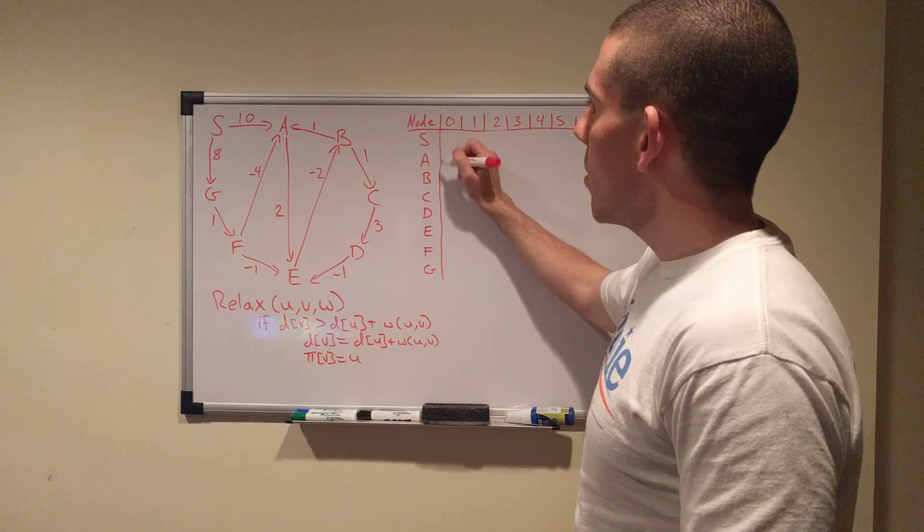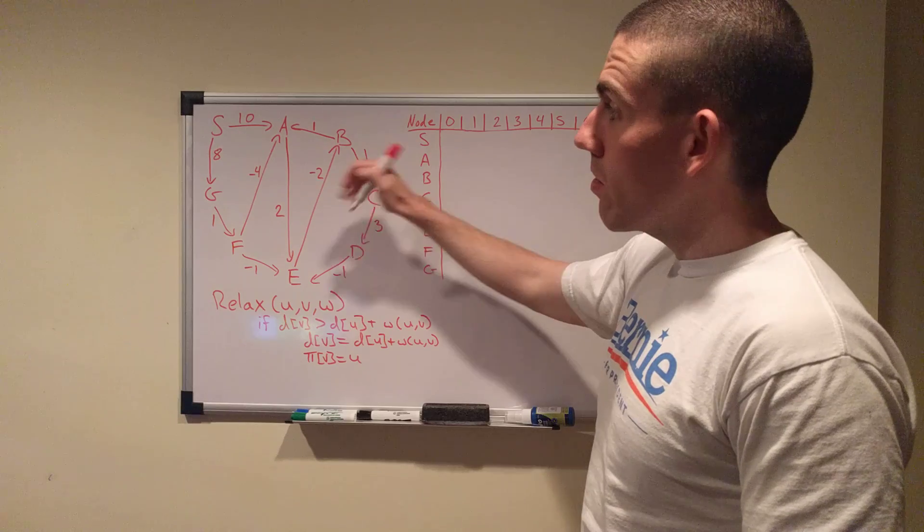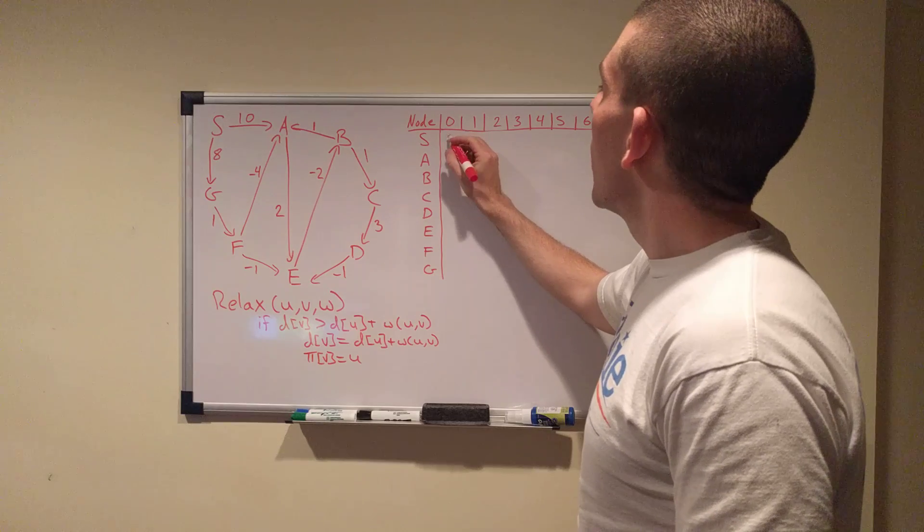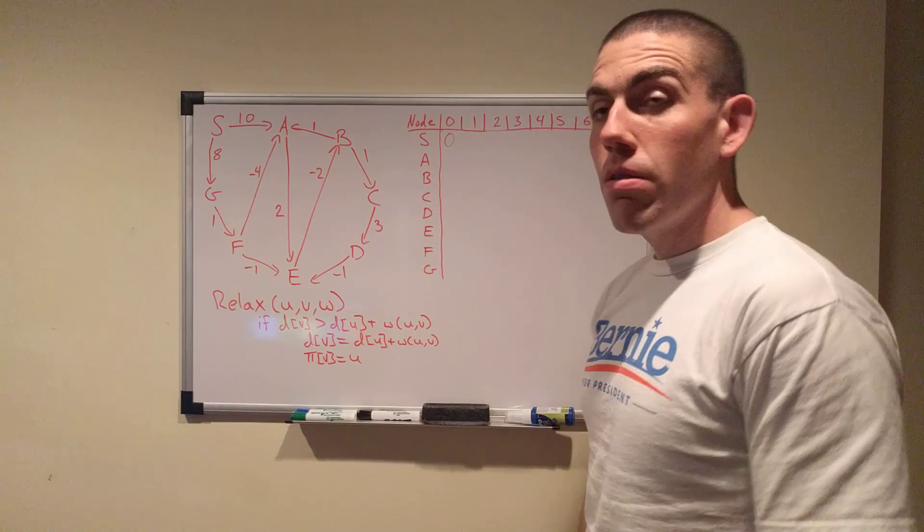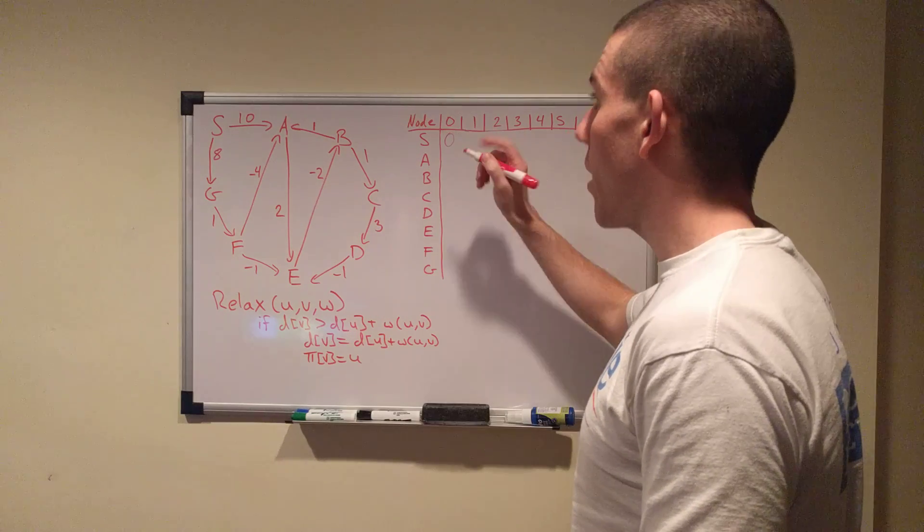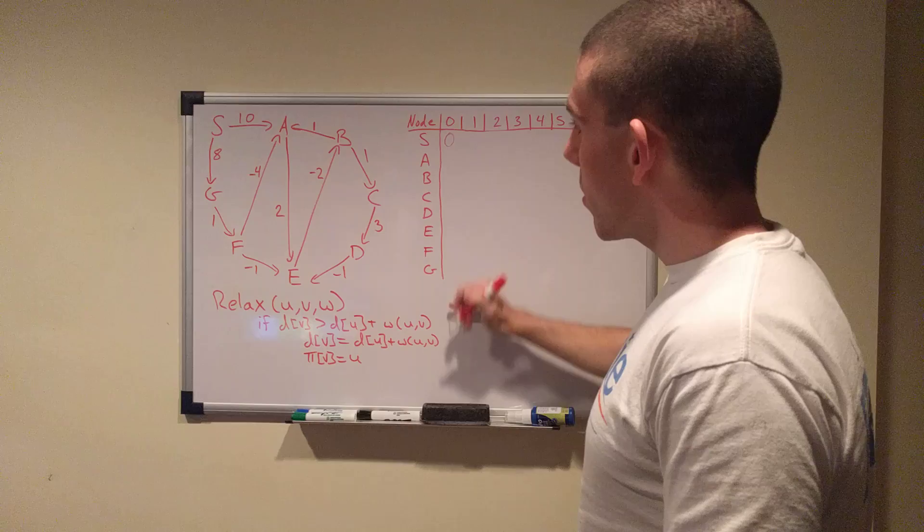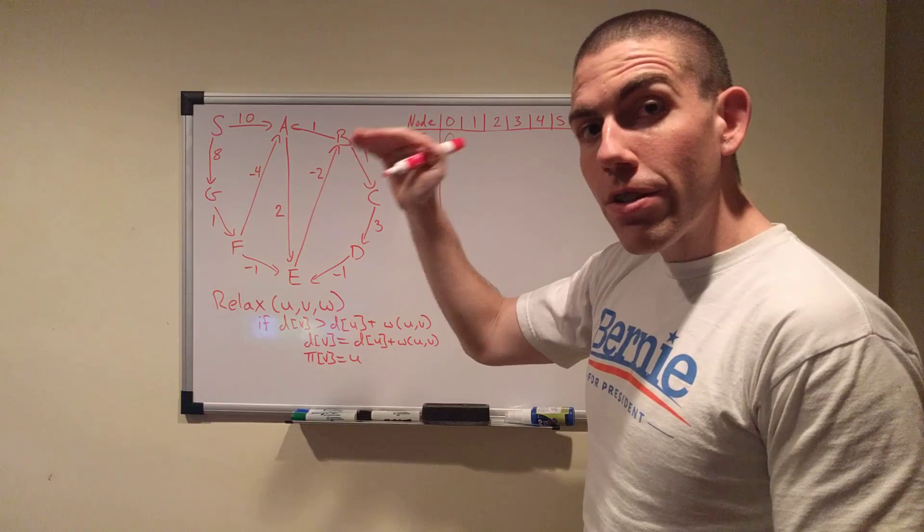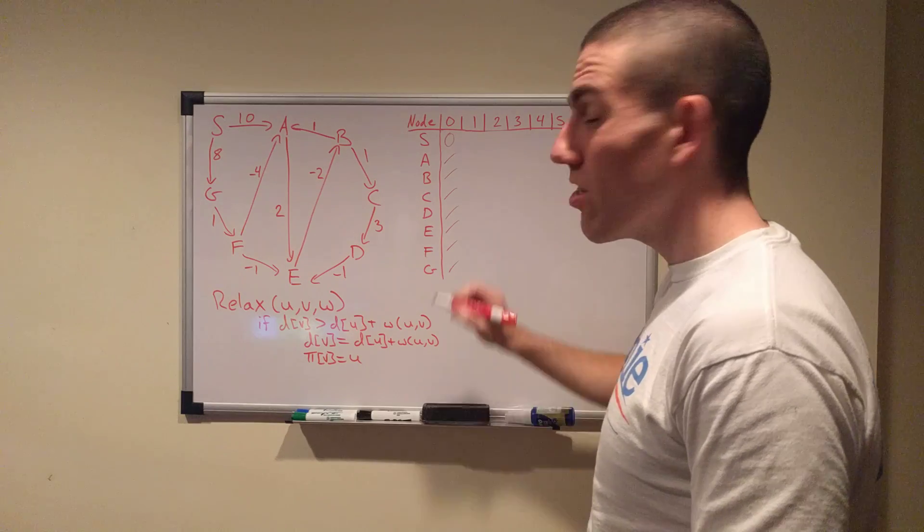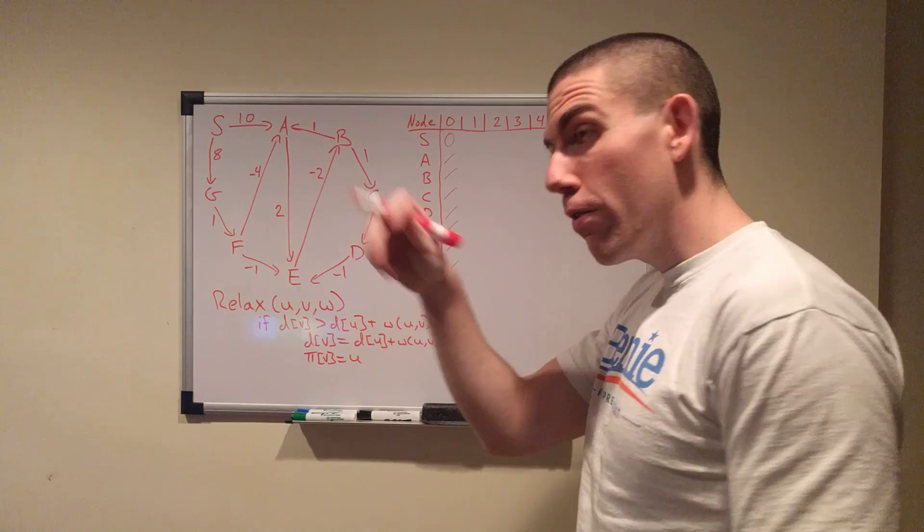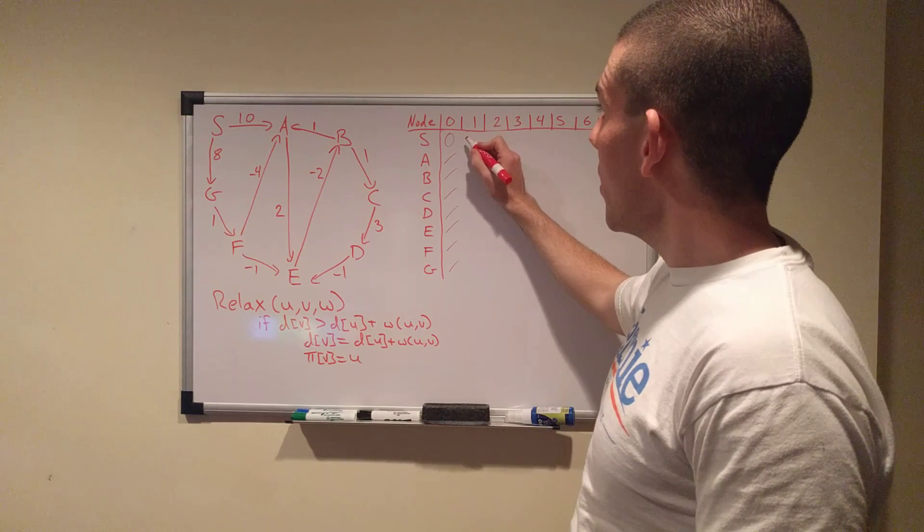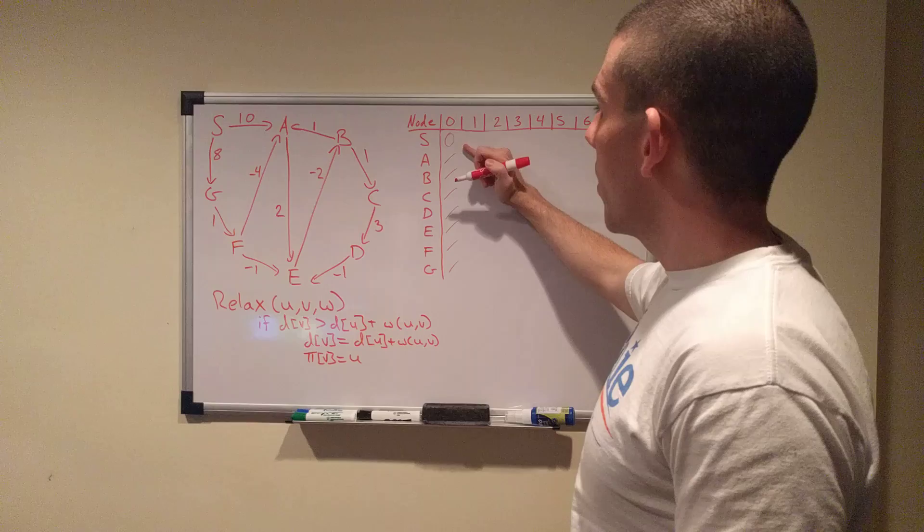But anyway, in the zeroth iteration, we have our source vertex S pointing out to everybody else. It has no incoming edges, so that'll make it easier. Its distance to itself, we're going to mark as zero, right? Because there's no, it's there. So zero. And in the zeroth step, remember, all U and V are set to infinity or null. In this case, I'm just going to be using the dash for null because it's an easier convention to write than infinity over and over and over. I have a hard time drawing infinity symbols.